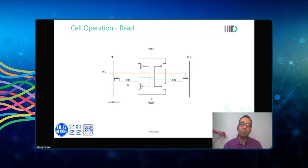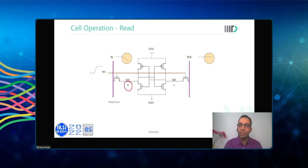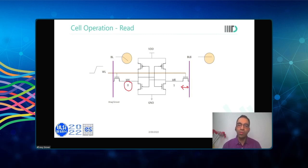Initially the bit lines are precharged to VDD. When the word line goes high, the side where zero is stored discharges, while the side where one is stored does not discharge — since the bit lines were already precharged to high, there is no VDS across that device. The differential that appears between bit line and bit line bar is then amplified through a sense amplifier in the IO region. This appears to be a very simple operation.